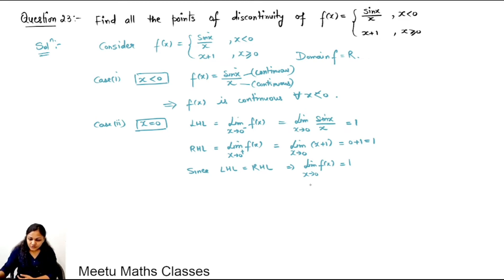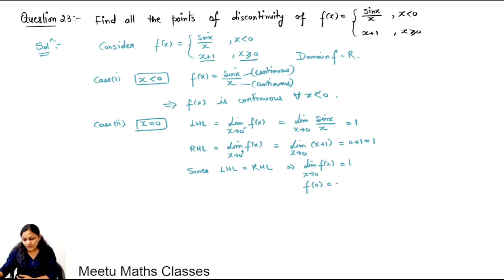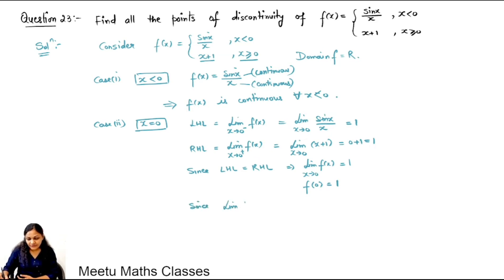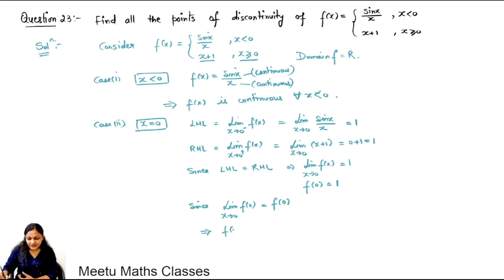We also check the exact value of the function at x equals 0. When x equals 0, the function definition is x plus 1, so f(0) equals 0 plus 1 equals 1. Since the limiting value as x tends to 0 equals f(0), the function is continuous at x equals 0.